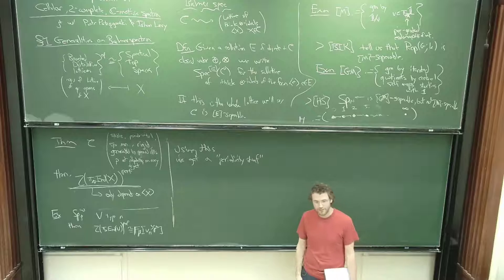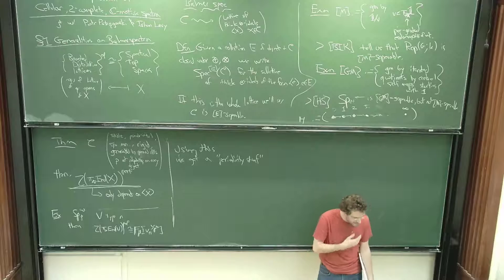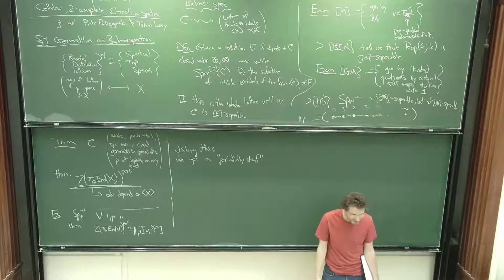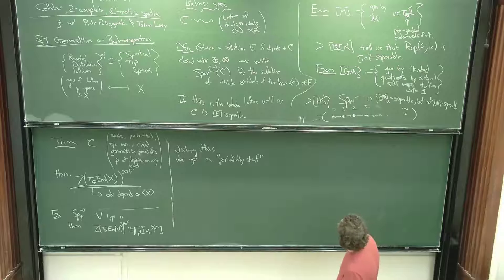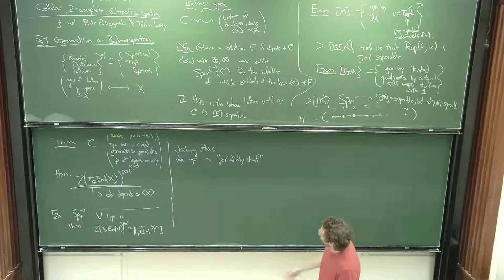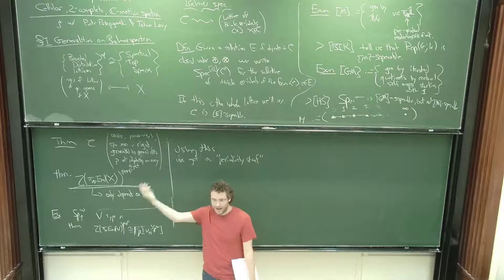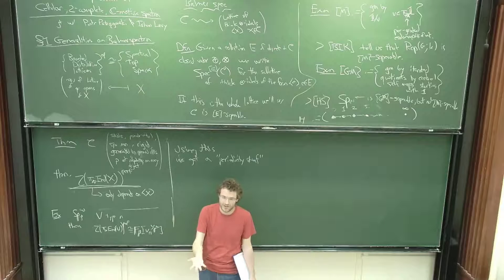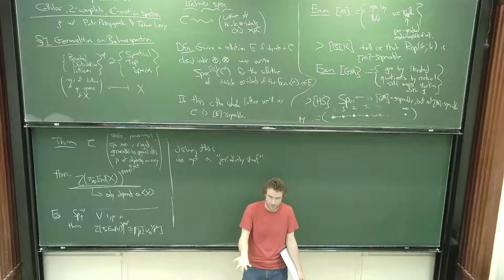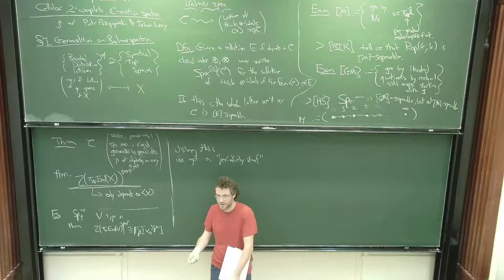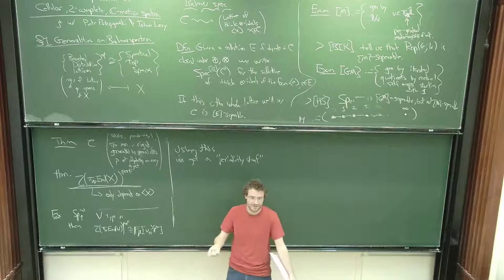I don't have an explanation for this yet, but in a lot of cases you can write down a stack where the periodicity sheaf on the Balmer spectrum matches: I have some category, I can compute its Balmer spectrum, and then I can separately write down a stack such that the global sections of the structure sheaf on closed sets matches the Balmer spectrum with its periodicity sheaf.